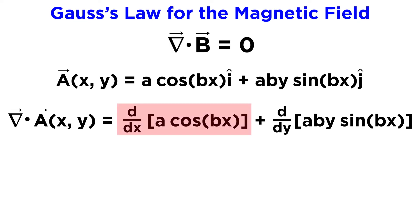For this first term, taking the derivative with respect to x requires that we use the chain rule. The derivative of cosine is negative sine, and then we must multiply by the derivative of what's inside here, so we get an additional b term, so that's negative ab sine bx.